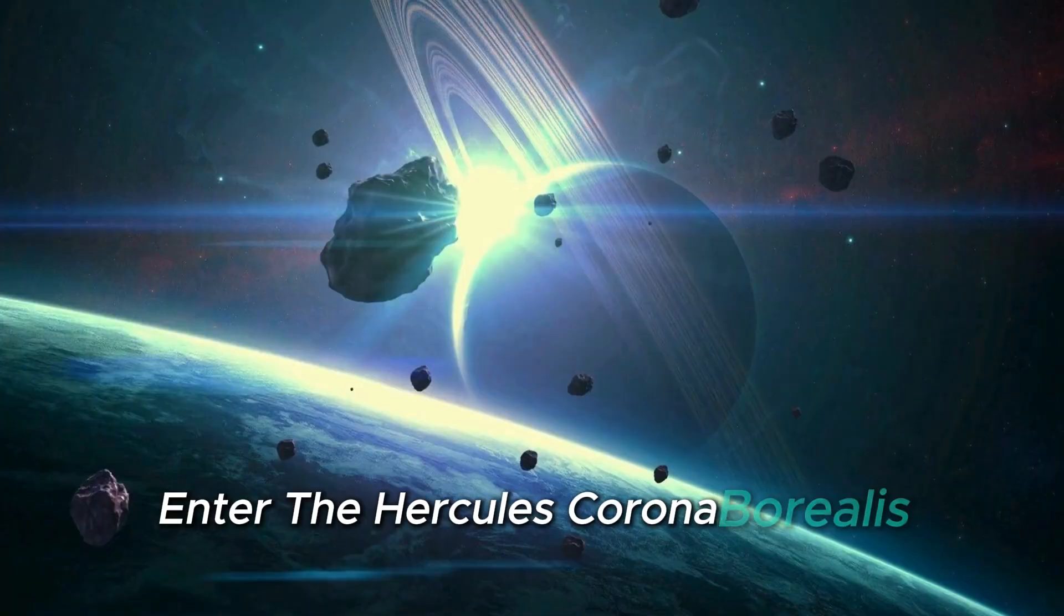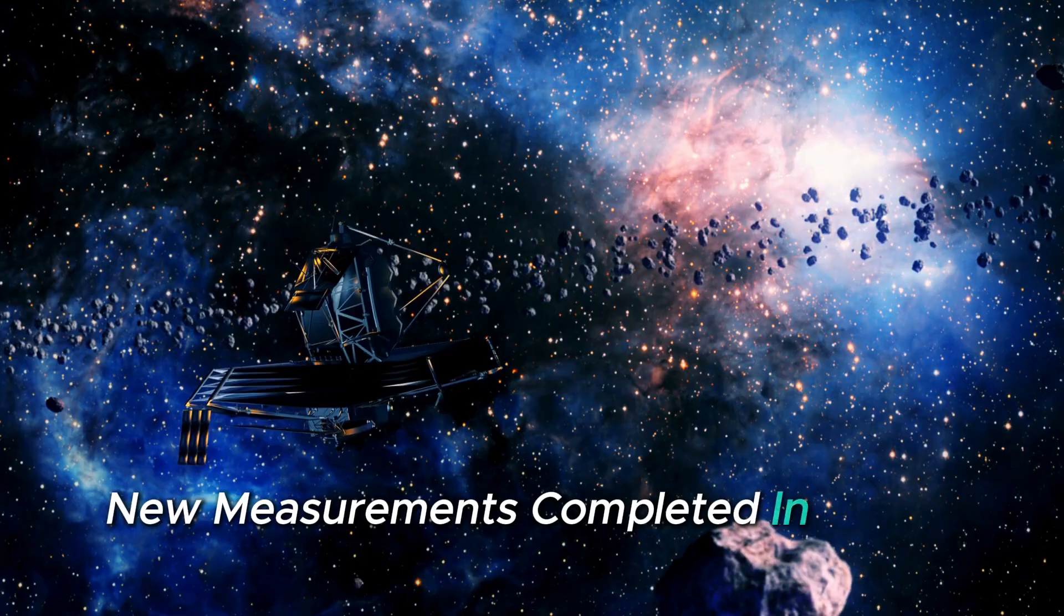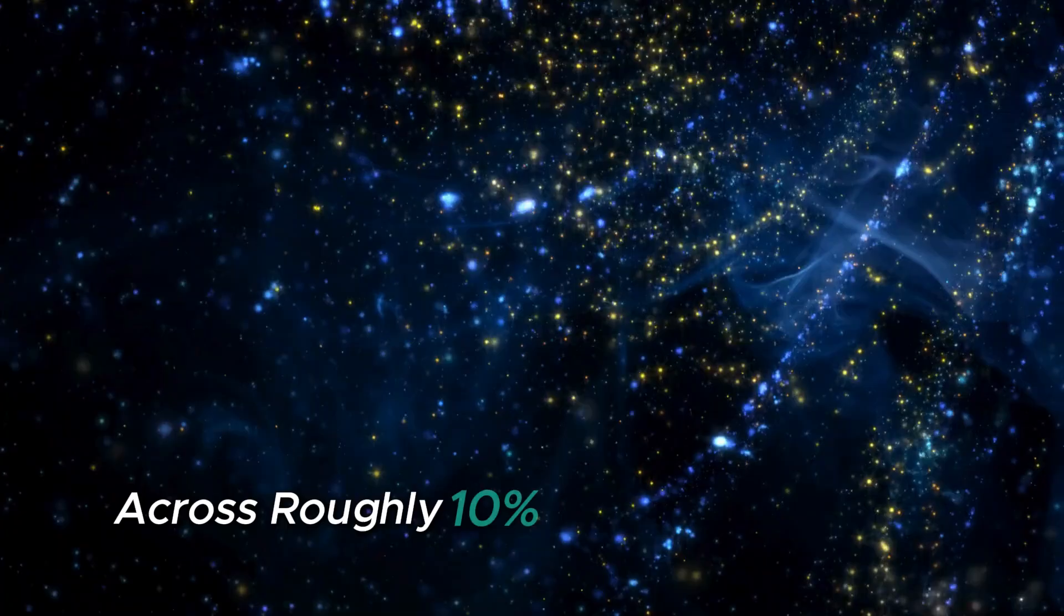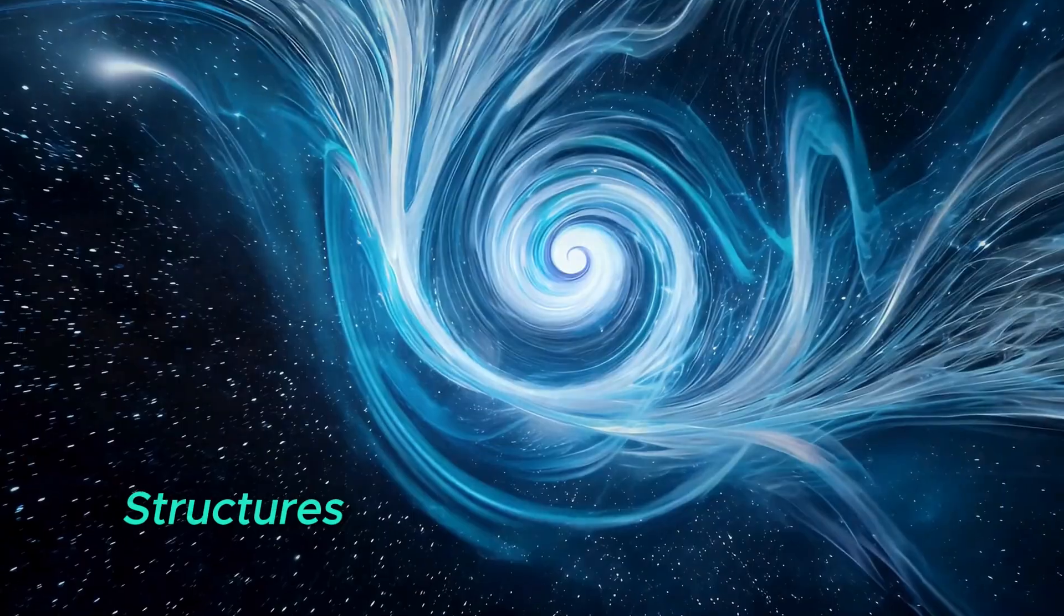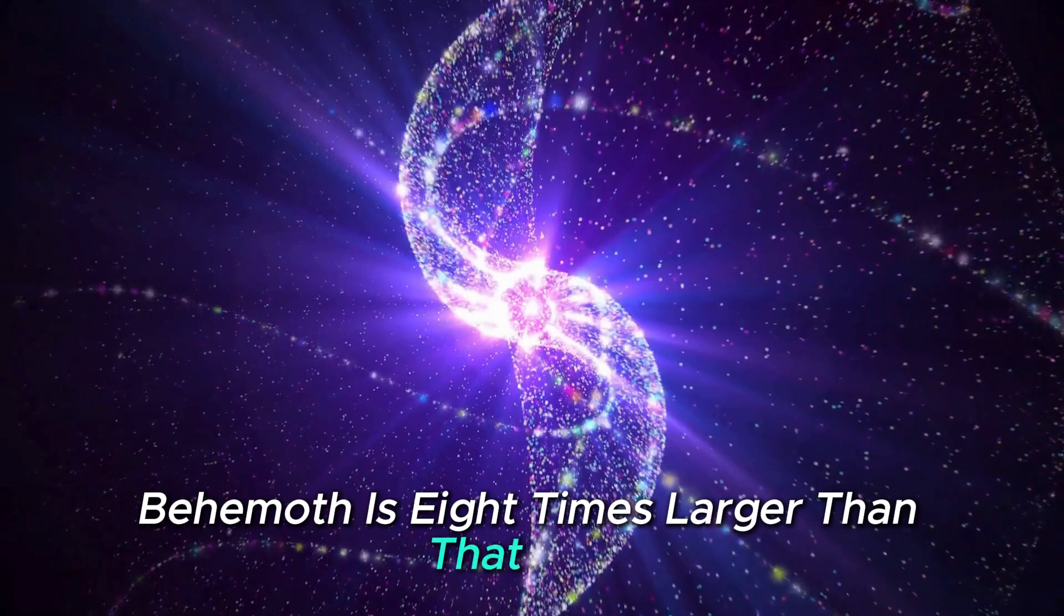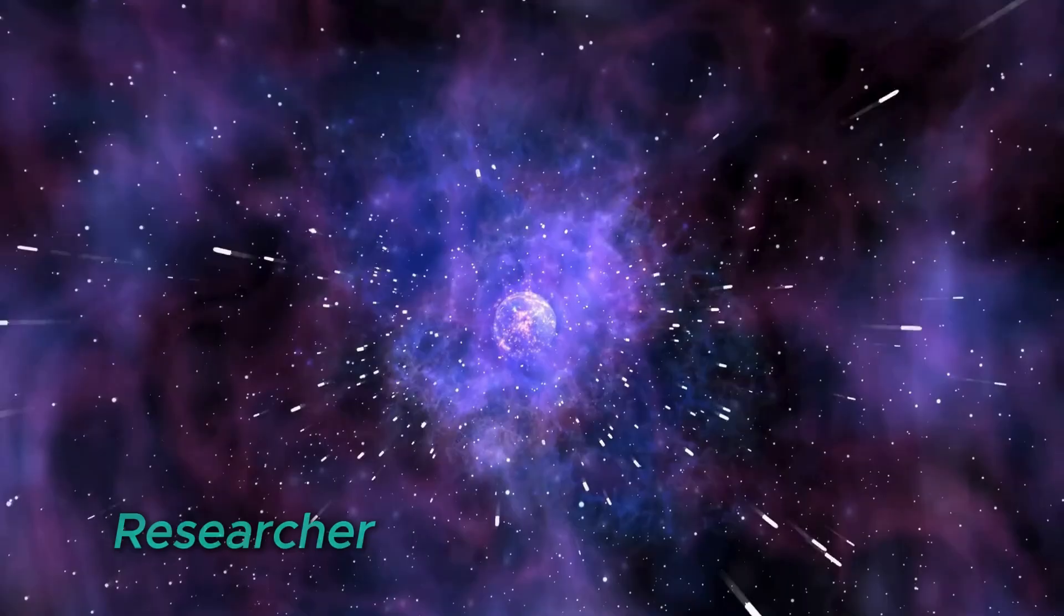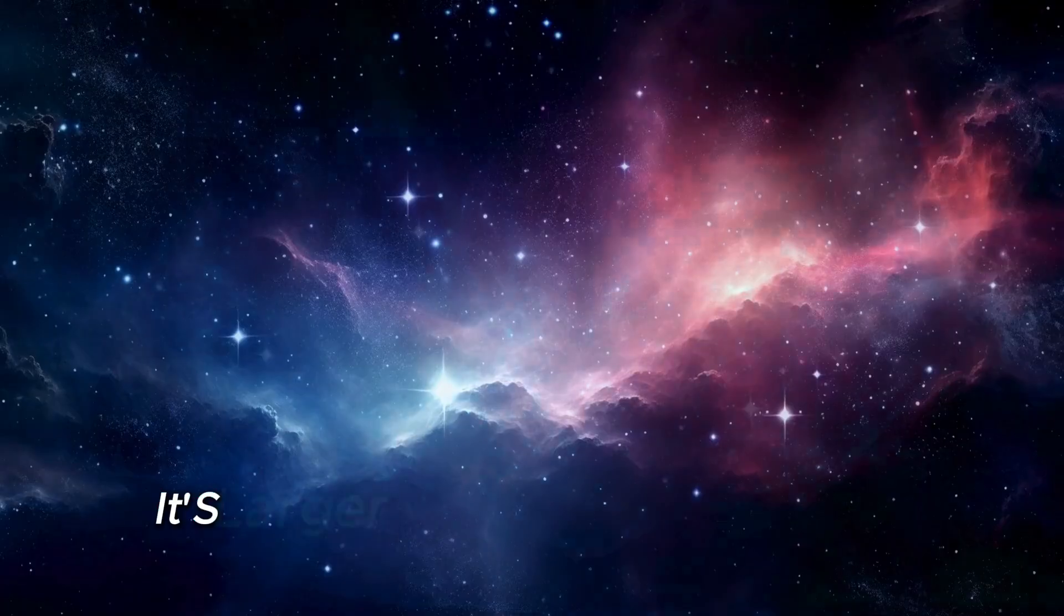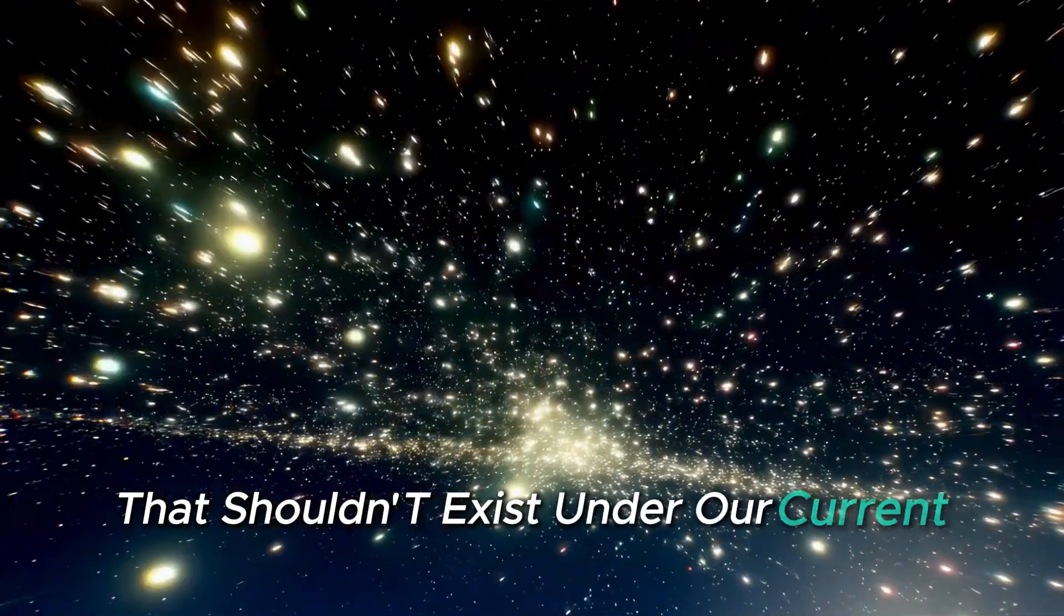Enter the Hercules-Corona Borealis Great Wall, a structure so massive it defies comprehension. New measurements completed in April 2025 estimate its size at over 10 billion light-years across, roughly 10% of the observable universe. To grasp this, consider that standard cosmology predicts structures shouldn't exceed 1.2 billion light-years. This cosmic behemoth is eight times larger than that limit, a single formation so vast it challenges everything we know about how gravity assembles matter. Researcher John Hakala summed it up: our sample isn't large enough to place an upper limit on its size. It's larger than anything we might compare it to. This isn't just a big structure, it's a cosmic anomaly that shouldn't exist under our current models.